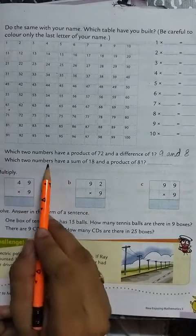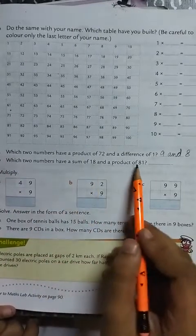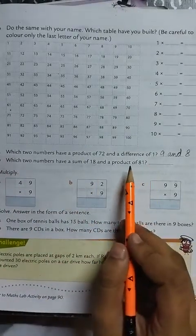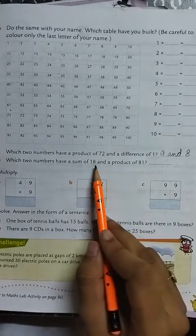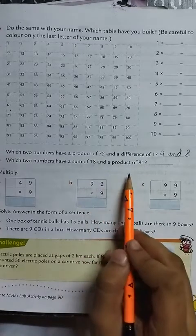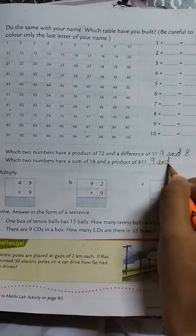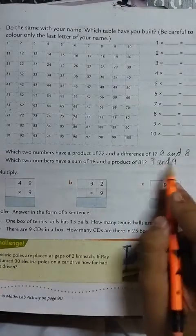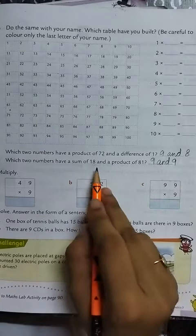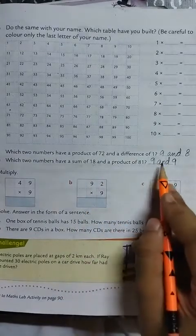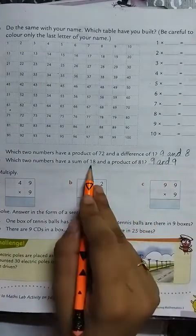Question B, which two numbers have a sum of 18 and a product of 81? So which two numbers have a sum of 18? When added, the answer is 18, and when multiplied, the answer is 81. 9 and 9. 9 multiplied by 9, the answer will be 81, and when we add 9 plus 9, the answer will be 18.